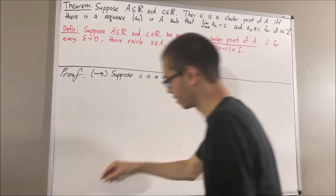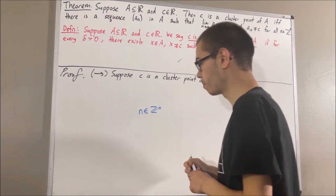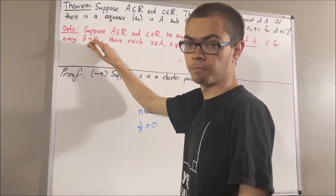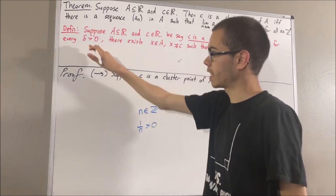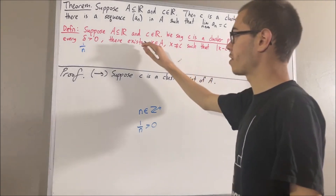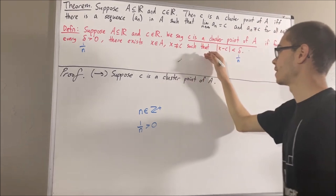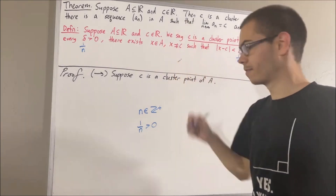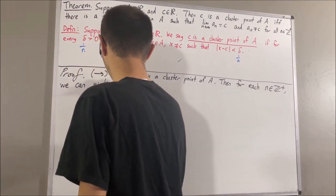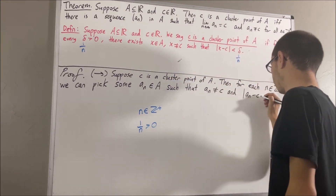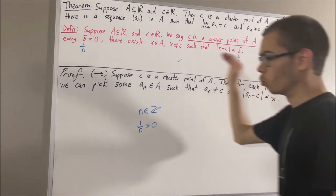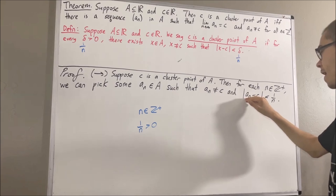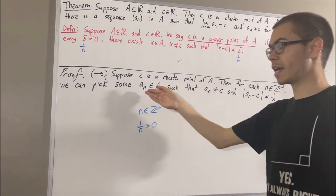Here's how we're going to construct this sequence. If we consider an arbitrary positive integer n, well then 1 over n is a positive real number. And since C is a cluster point of A, this means that the cluster point statement is true for every delta greater than 0. So in particular, it must be true for delta equal to 1 over n. Then we have that there exists an element x in A distinct from C such that the absolute value of x minus C is less than 1 over n. We're going to denote x by A sub n. So for each positive integer n, we can pick an element A sub n in A such that A sub n is distinct from C and the absolute value of A sub n minus C is less than 1 over n. This gives us a sequence of elements in A.